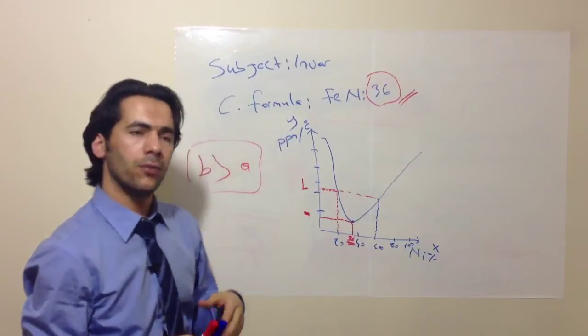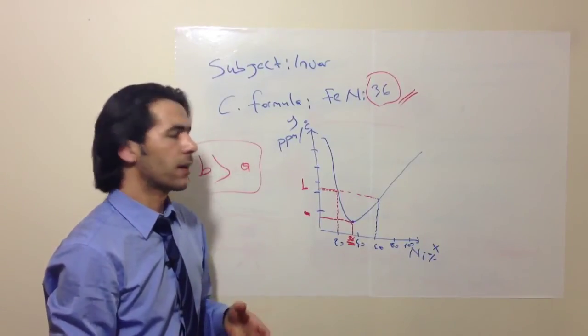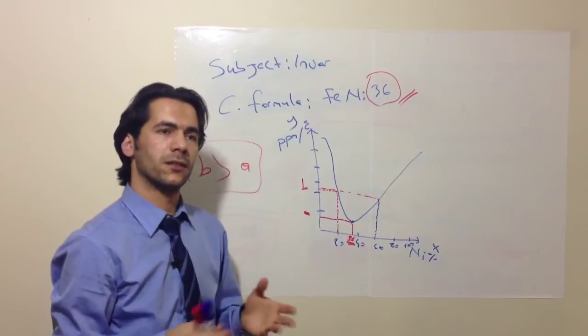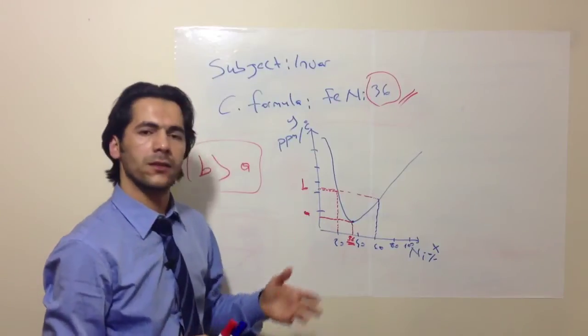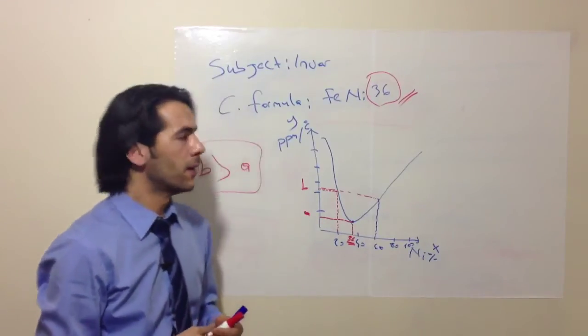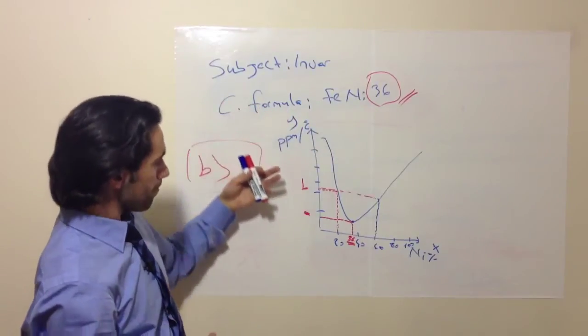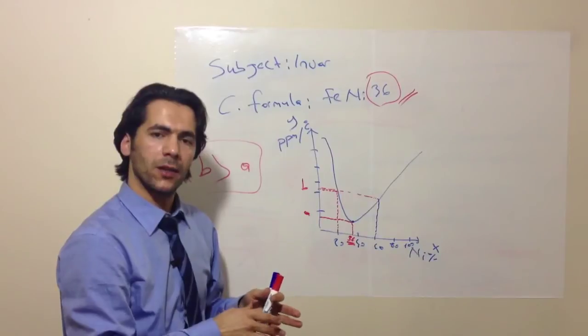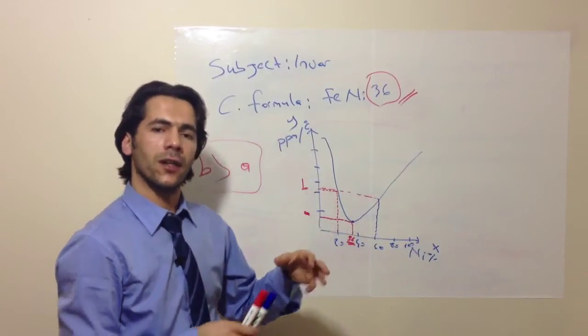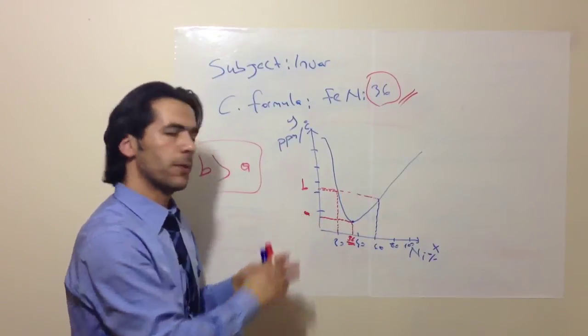As we understand from here, the Invar has many properties like other alloys such as higher corrosion resistance or hardness. But that makes it Invar, which is the lowest thermal expansion rate, which other alloys don't have.